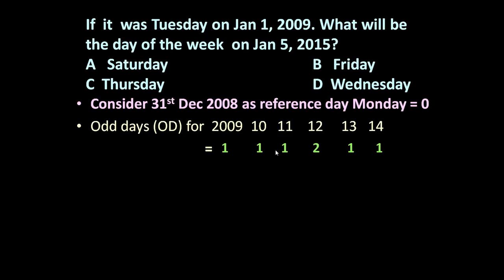Total of these 1, 1, 1, 2, 1, 1 is equal to 7 odd days up to 2014. And we have to determine up to 5th January 2015. So number of odd days in January 2015 is 5 because only 5th January date is there.